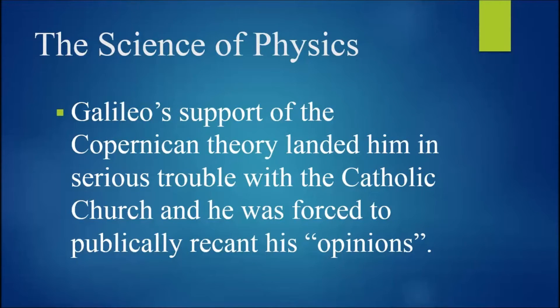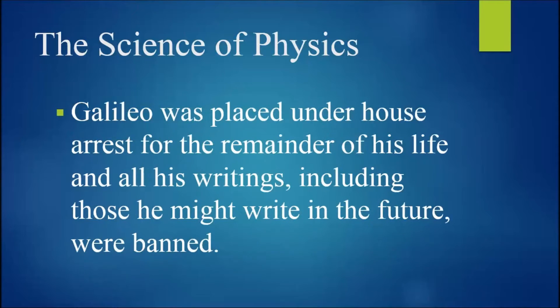As many of you know, Galileo's support of the Copernican theory landed him in serious trouble with the Catholic Church, and he was forced to publicly recant his opinions. He was then placed under house arrest for the remainder of his life, and all his writings, including those he might write in the future, were banned.